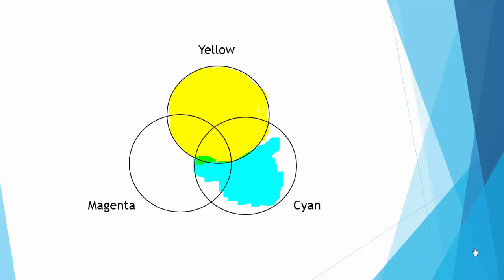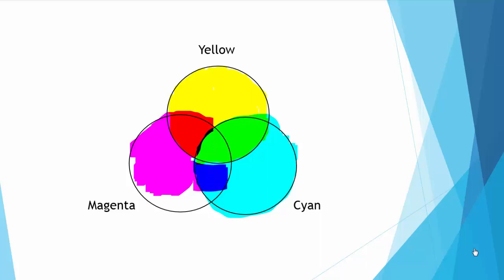Again, look when they overlap. And magenta, look carefully when they overlap you see red. And you see blue. And right at center is black.